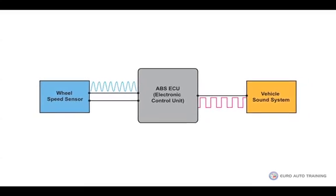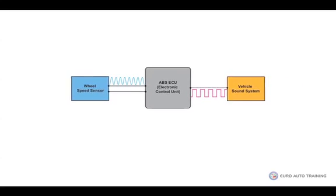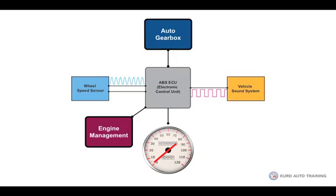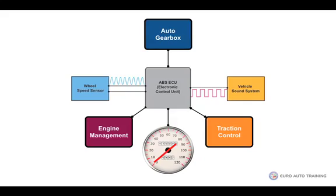As well as supplying a wheel speed signal to the sound system, the ABS ECU could also be supplying a speed signal to the engine management system, the automatic gearbox system, the speedometer, the traction control system, and other systems. Therefore there could be a number of signal wires passing from the ABS ECU to numerous other vehicle systems.